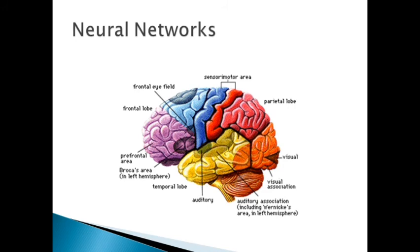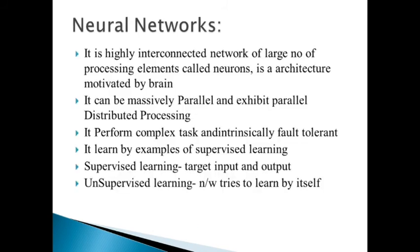Neural networks are a highly interconnected network of a large number of processing elements, called neurons. It is an architecture motivated by the brain. Just as the brain consists of millions of interconnected neurons, neural networks are also interconnected by a large number of neurons. It exhibits parallel distributed processing and performs complex tasks.